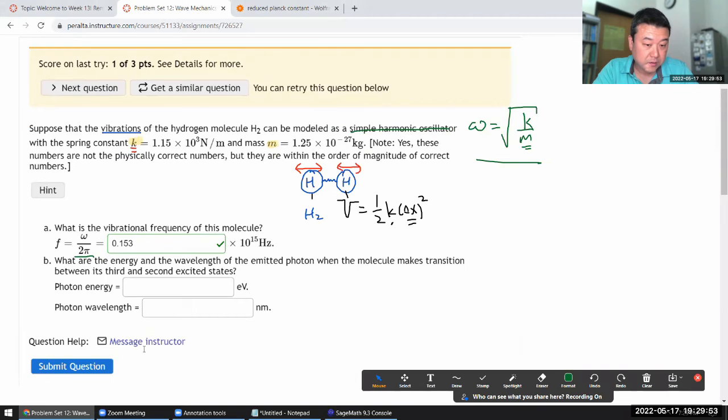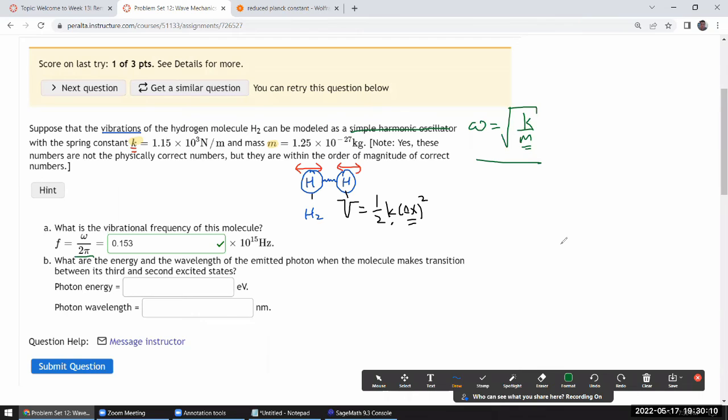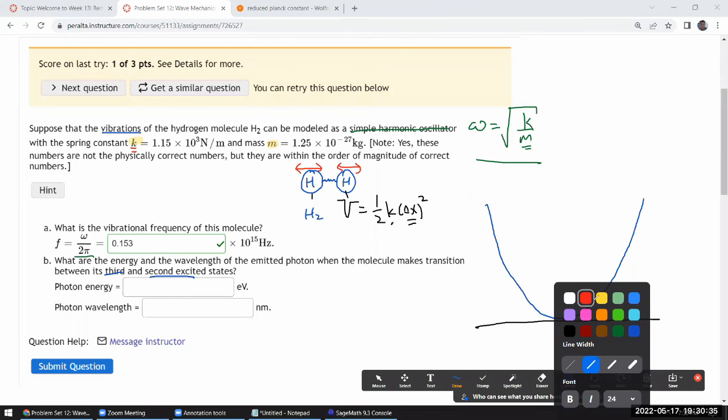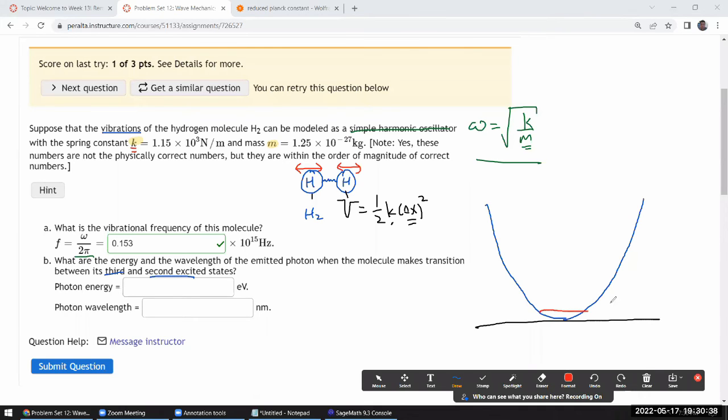Let's check to make sure that it's correct. It says what are the energy and the wavelength of the emitted photon when the molecule makes transition between its third and second excited states. Okay, unless the question meant this to be super difficult and making me consider different vibrational mode which I don't think it means to, I think we are just dealing with one dimensional simple harmonic oscillator.